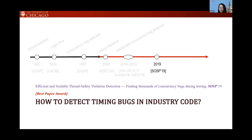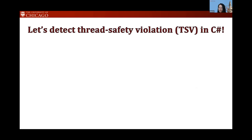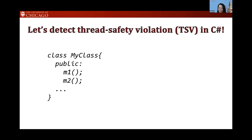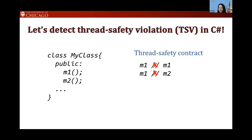That started our journey toward the SOSP best paper. My student was initially very optimistic. My Microsoft collaborators were focusing on a particular type of concurrency bug called thread safety violation. In C#, there are certain classes with a contract that certain methods cannot execute concurrently — for example, a hash table where lookup and insertion cannot overlap. If there's overlap between method calls from different threads to the same object of such a class, that's a bug. This naturally eliminates the benign race problem: the language specification says those methods cannot be concurrent.